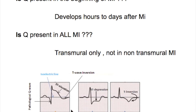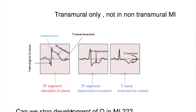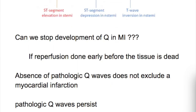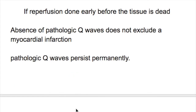We can stop the development of Q waves in MI if perfusion is restored early before the tissue dies — achieved through percutaneous coronary intervention or thrombolytic therapy, which preserves blood supply by breaking the thrombus. Pathological Q waves persist permanently after MI and do not disappear. They develop in scar tissue, which is electrically negative compared to surrounding normal tissue — hence the negative deflection.